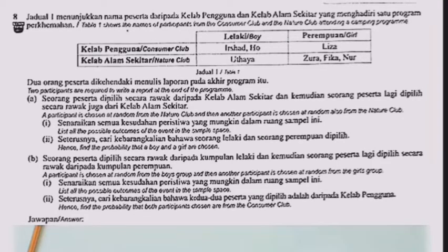Table one shows the names of participants from the Consumer Club and the Nature Club attending a camping program. Two participants are required to write a report at the end of the program.